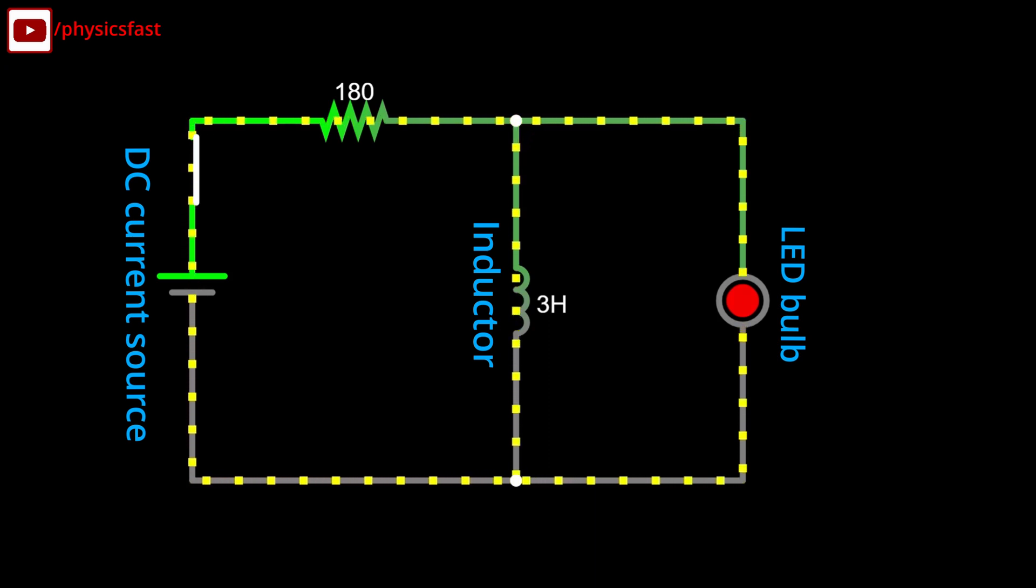But gradually, the flow of current will increase, and the resistive force of the inductor will decrease. This resistive force is called magnetomotive force or MMF. At some point, it will be seen that all the electrons in the circuit will continue to flow through the inductor. No current will flow with the lamp.